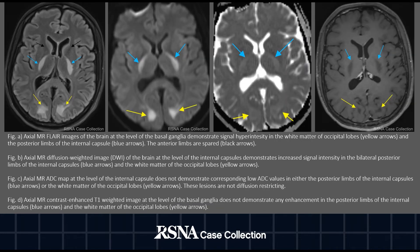The patient then underwent an MRI of his brain with and without contrast to evaluate his CT findings. Figure A on the left is an axial FLAIR image of the brain at the level of the basal ganglia. It demonstrated signal hyperintensity of the subcortical white matter in the occipital lobes and the bilateral posterior limbs of the internal capsules. Notice the sparing of the anterior limbs of the internal capsules bilaterally. Figures B and C are the diffusion-weighted images and the corresponding ADC map at that level. Although the lesions demonstrate a bright signal on the DWI images, they do not have a corresponding dark signal on the ADC map and hence are not diffusion-restricting. Figure D is a contrast-enhanced T1 image at that level, which does not demonstrate any enhancement of these lesions. The cerebellar white matter lesions had similar imaging characteristics.